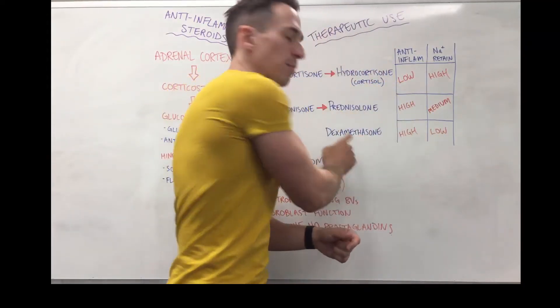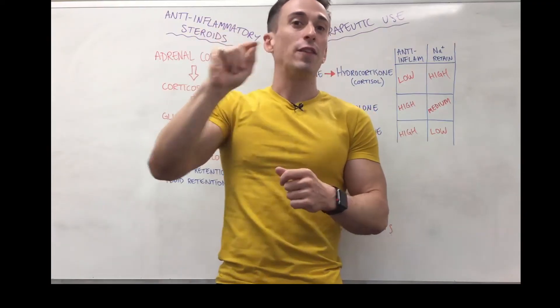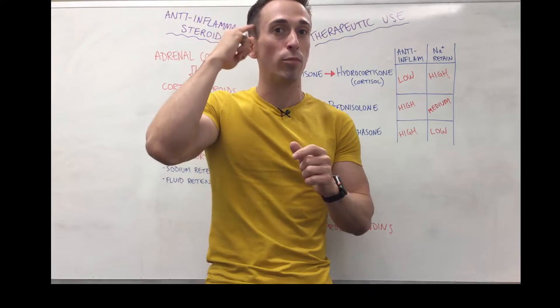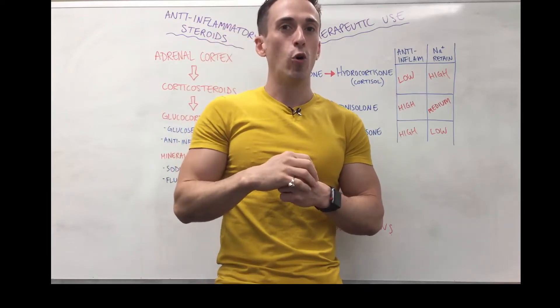If you give them dexamethasone, it inhibits this process. Now if it doesn't inhibit this process after giving it to them, it's an indication that there may be a problem up at the hypothalamus or pituitary.